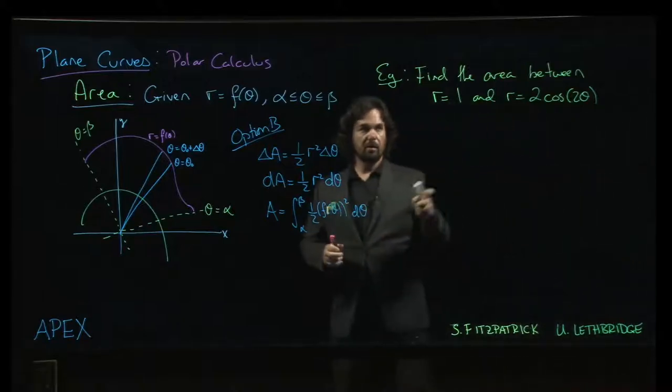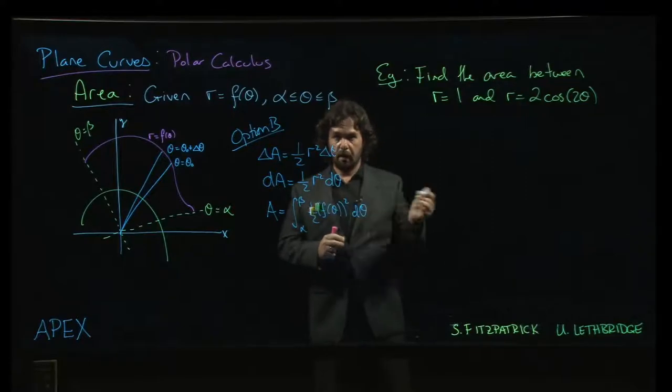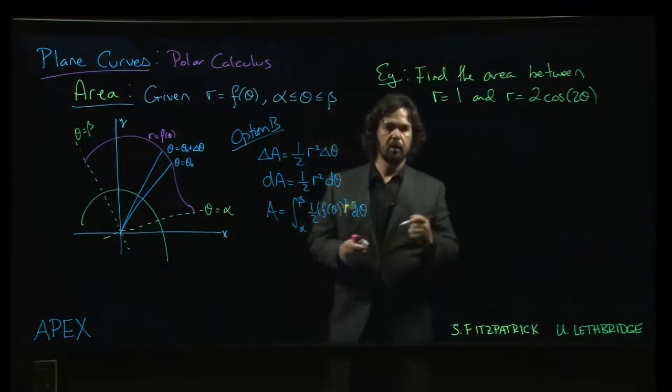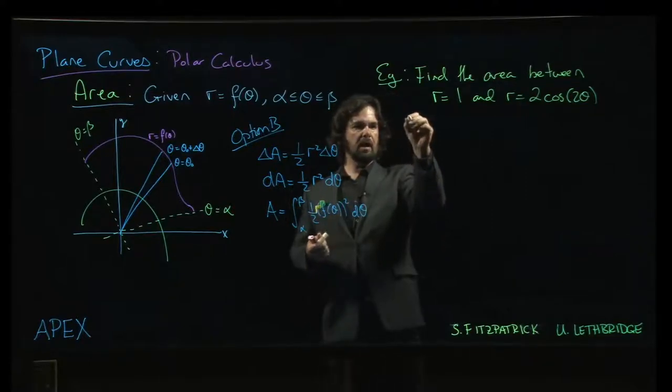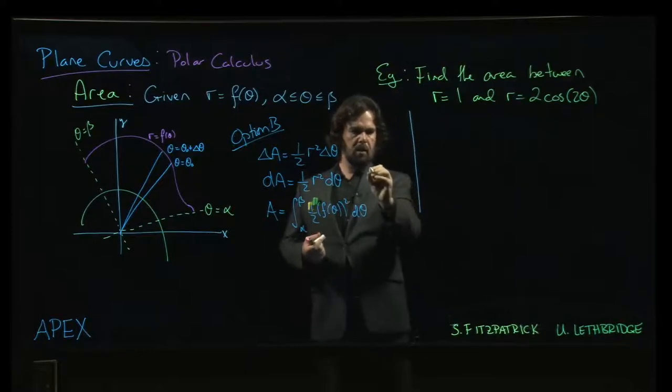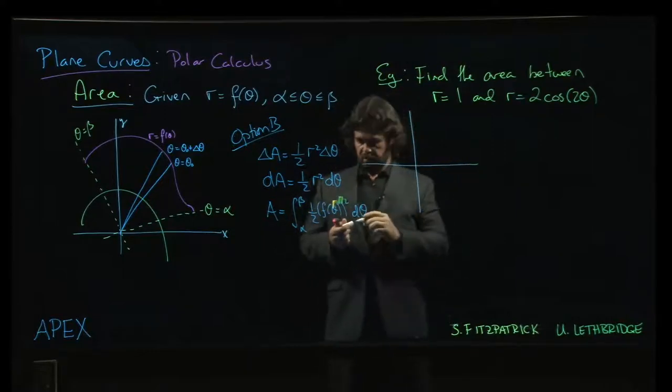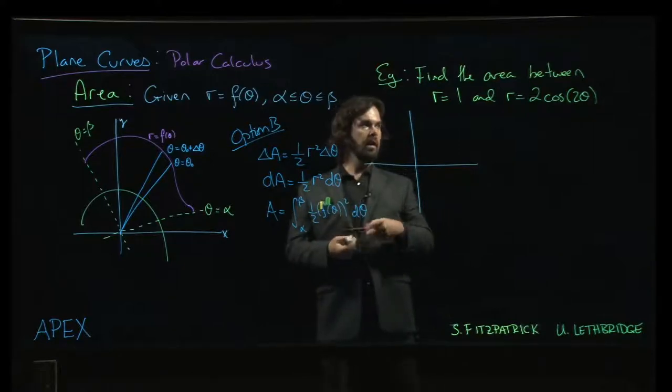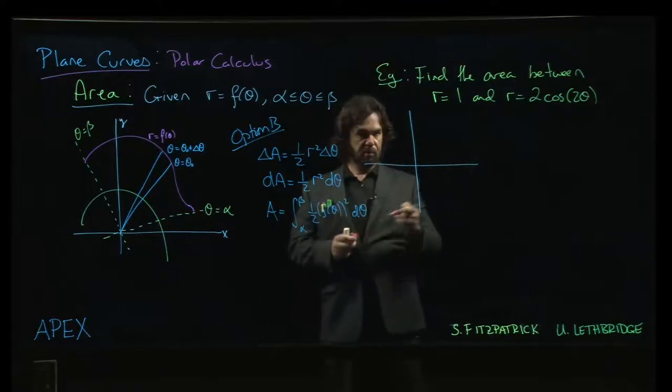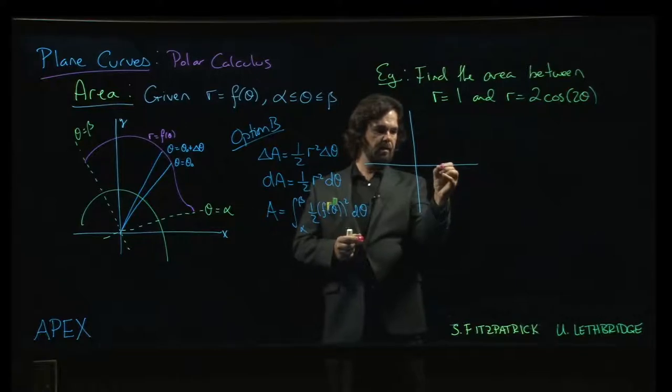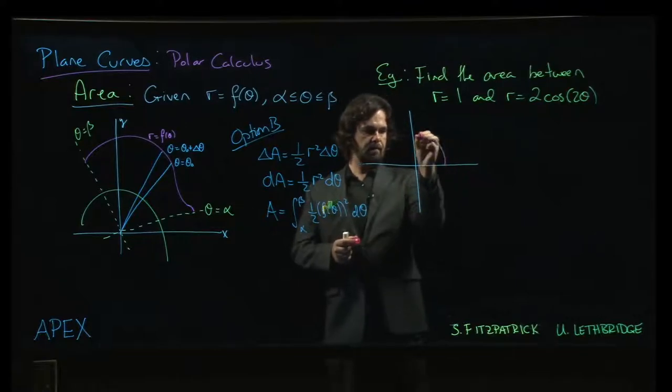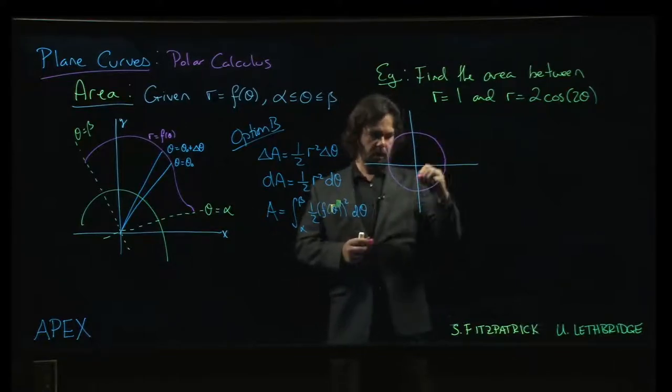So we're going to look at another example involving area with polar curves. This one is a little bit different from the last one. Let me sketch things out and then you'll maybe see why. So if we draw things, and we'll have to also sort of disambiguate a bit here. We'll talk about the area between them.